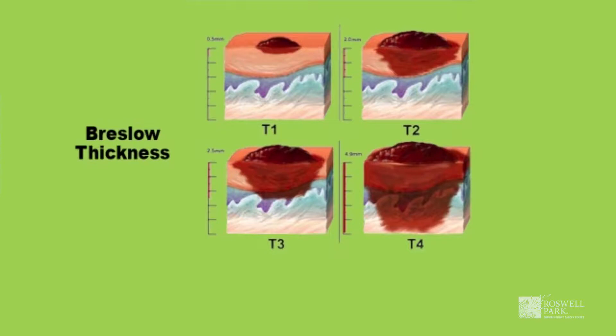In general, a melanoma that's less than one millimeter thick is considered very thin and low risk, so a very low chance of it metastasizing to the lymph nodes or the distant organs. A melanoma over four millimeters thick is considered a thick melanoma. That would be a higher risk.